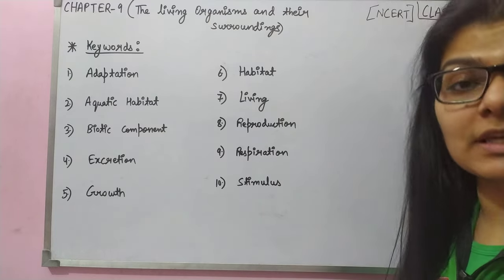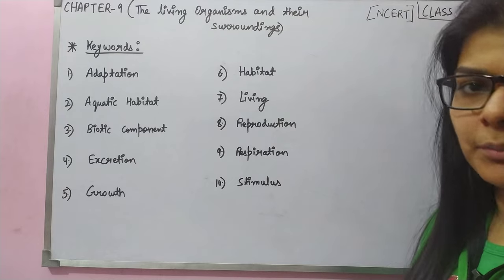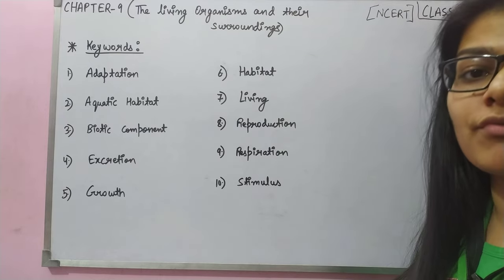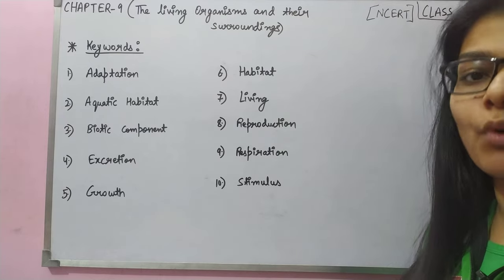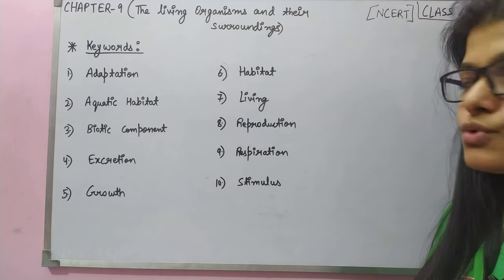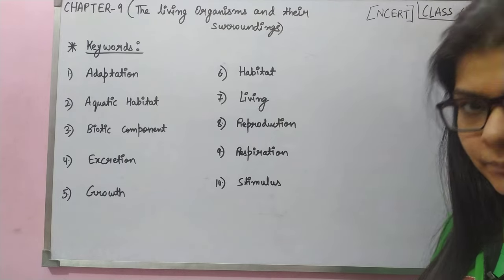The fourth point is Excretion. The meaning of excretion is the excretory or waste product produced by the body or by a particular cell. That is what we call excretion.